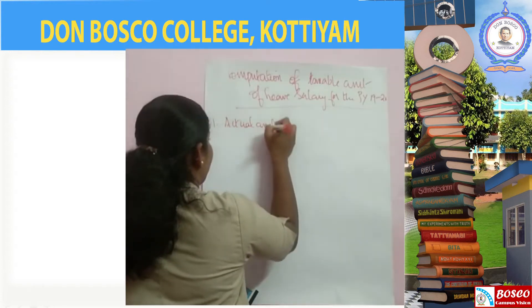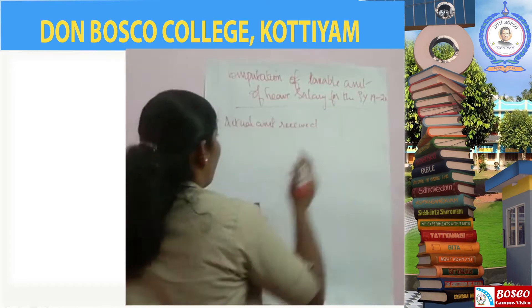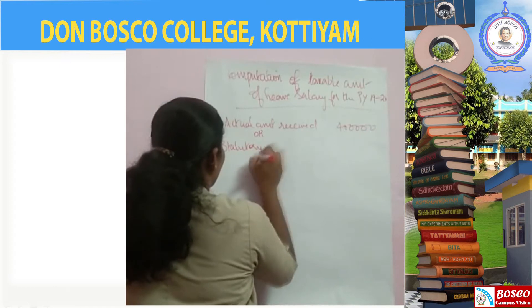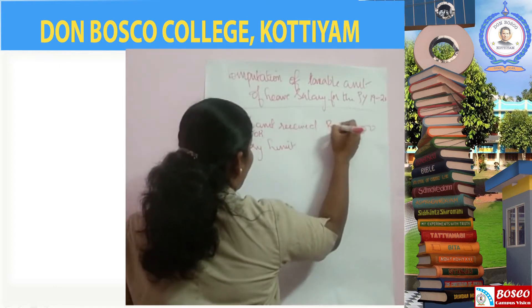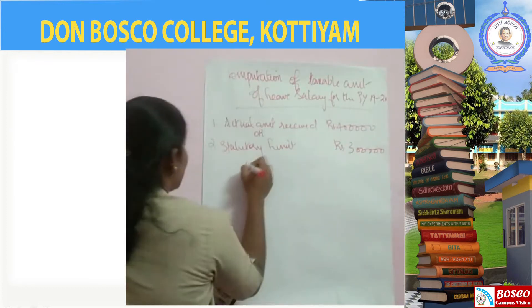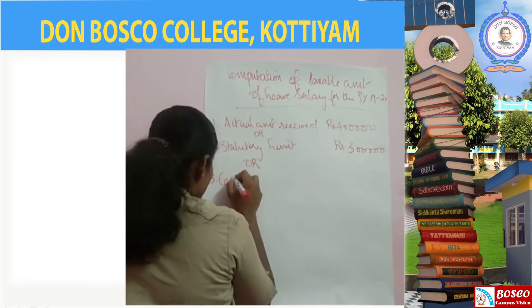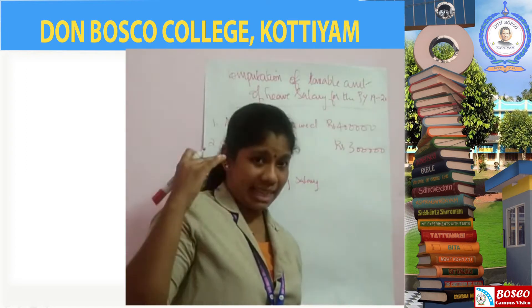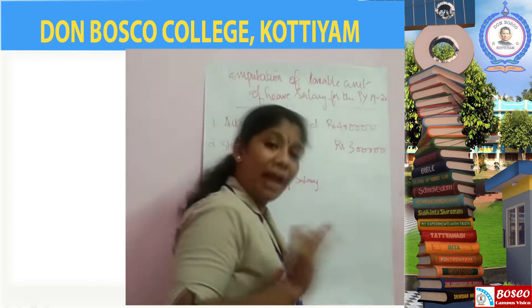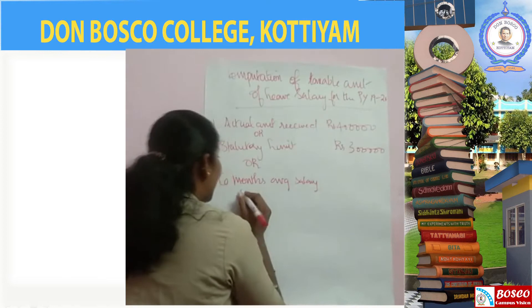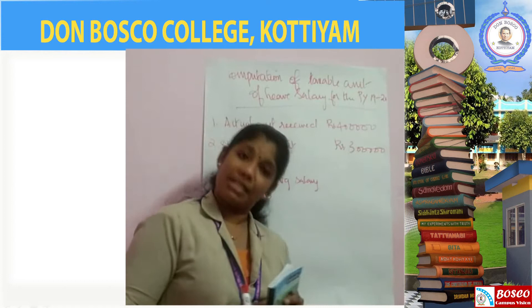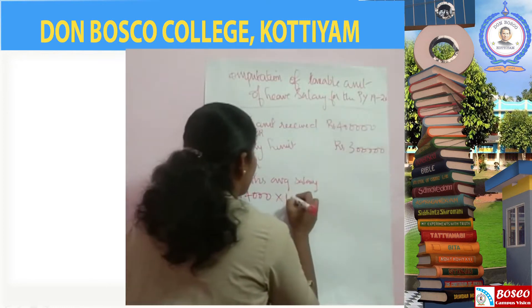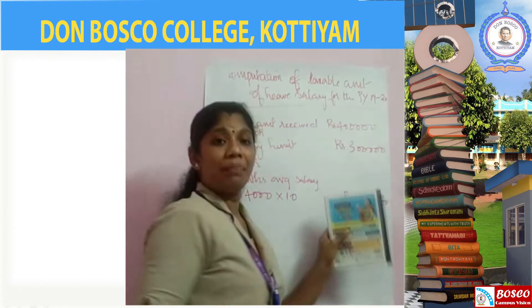Now listing the four amounts: First, actual amount received is Rs. 4 lakh. Second, statutory limit is Rs. 3 lakh. Third, 10 months average salary — since DNS allowance is not forming part of basic salary, it is basic salary Rs. 14,000 multiplied by 10, giving Rs. 1,40,000. Fourth, cash equivalent due on the basis of average salary — this will be computed next.